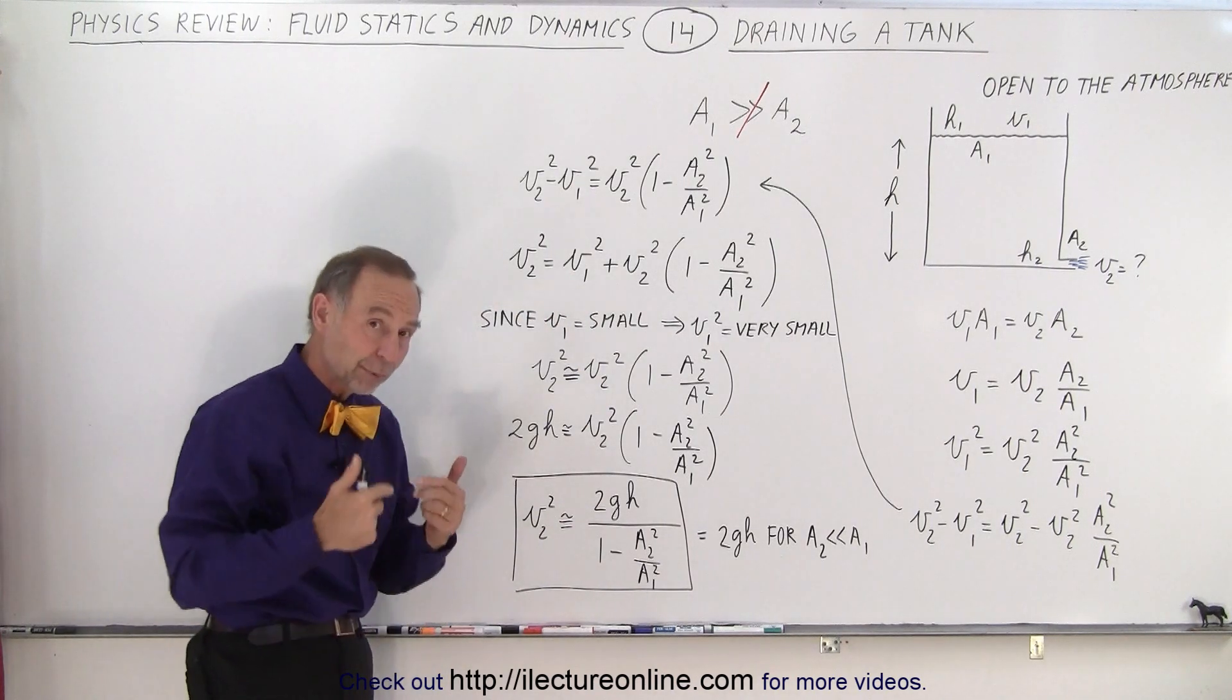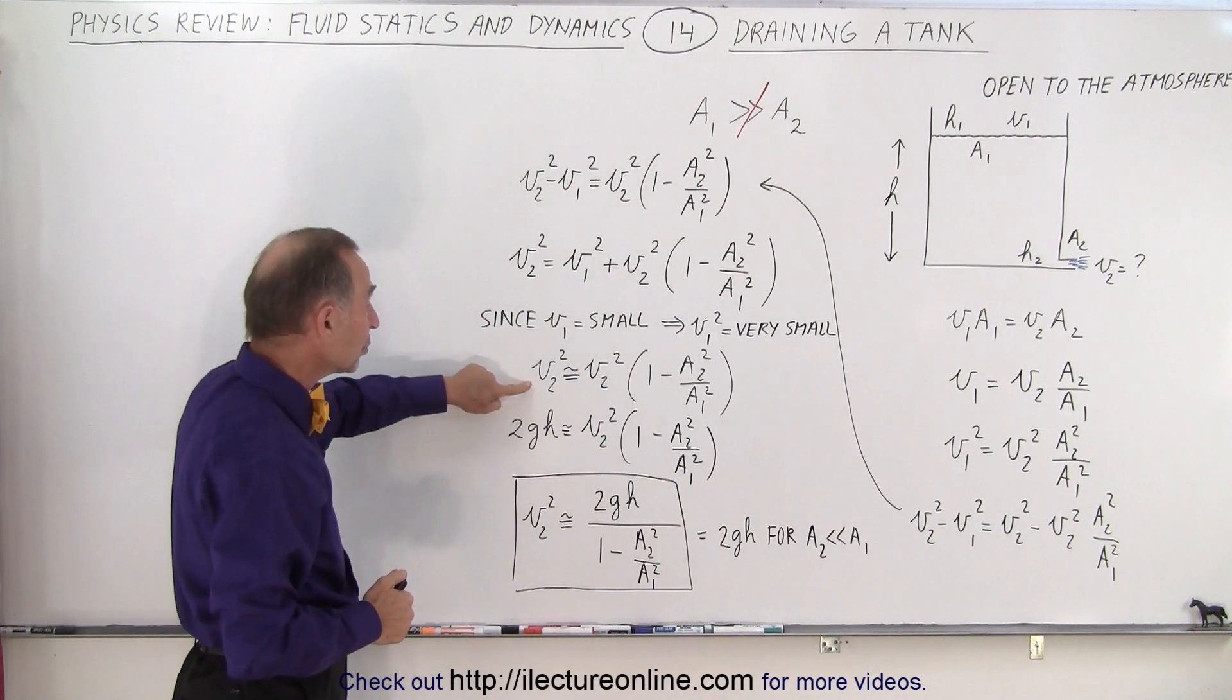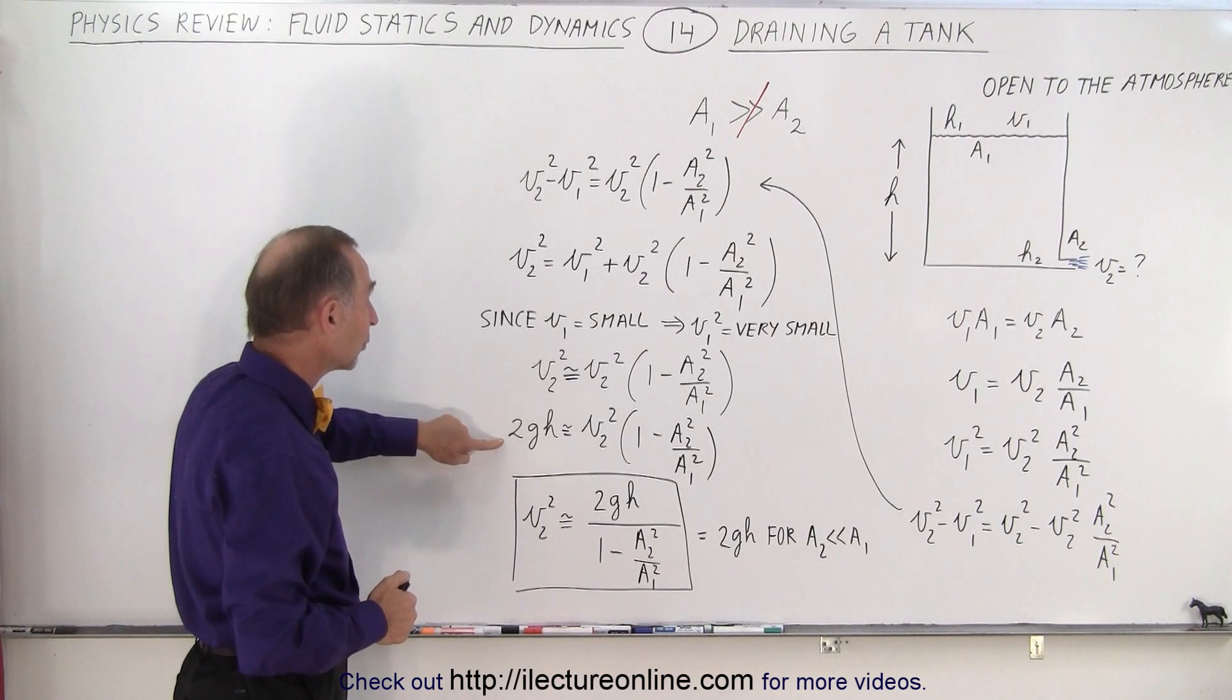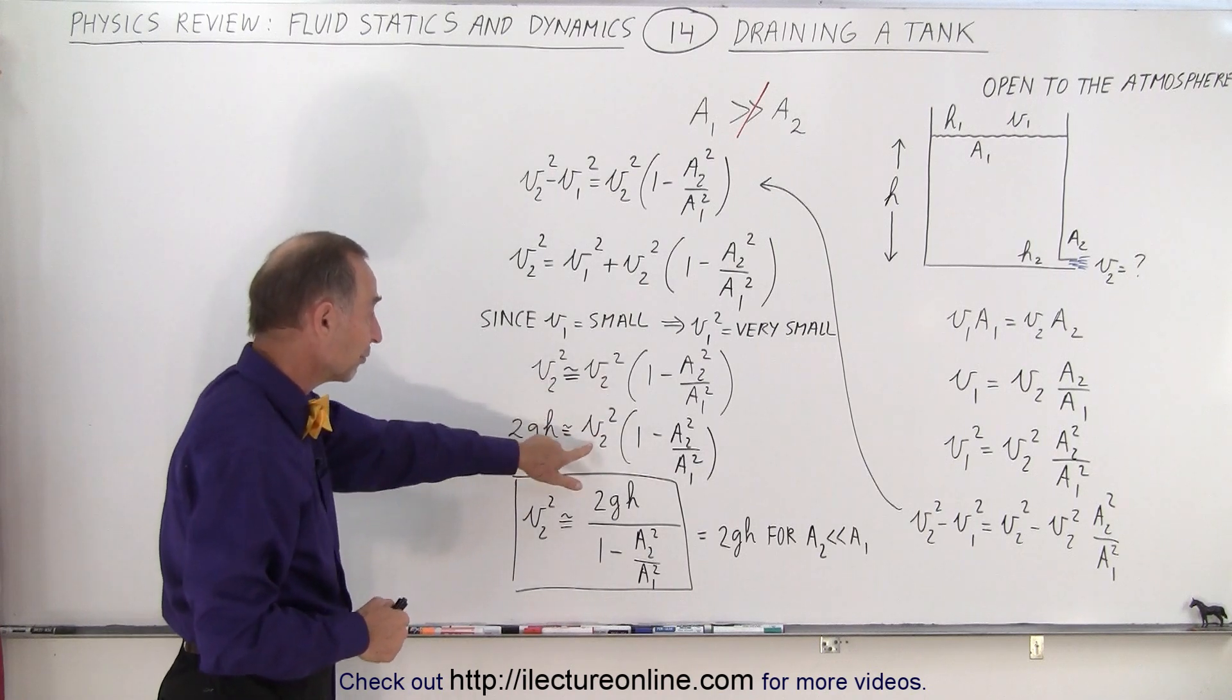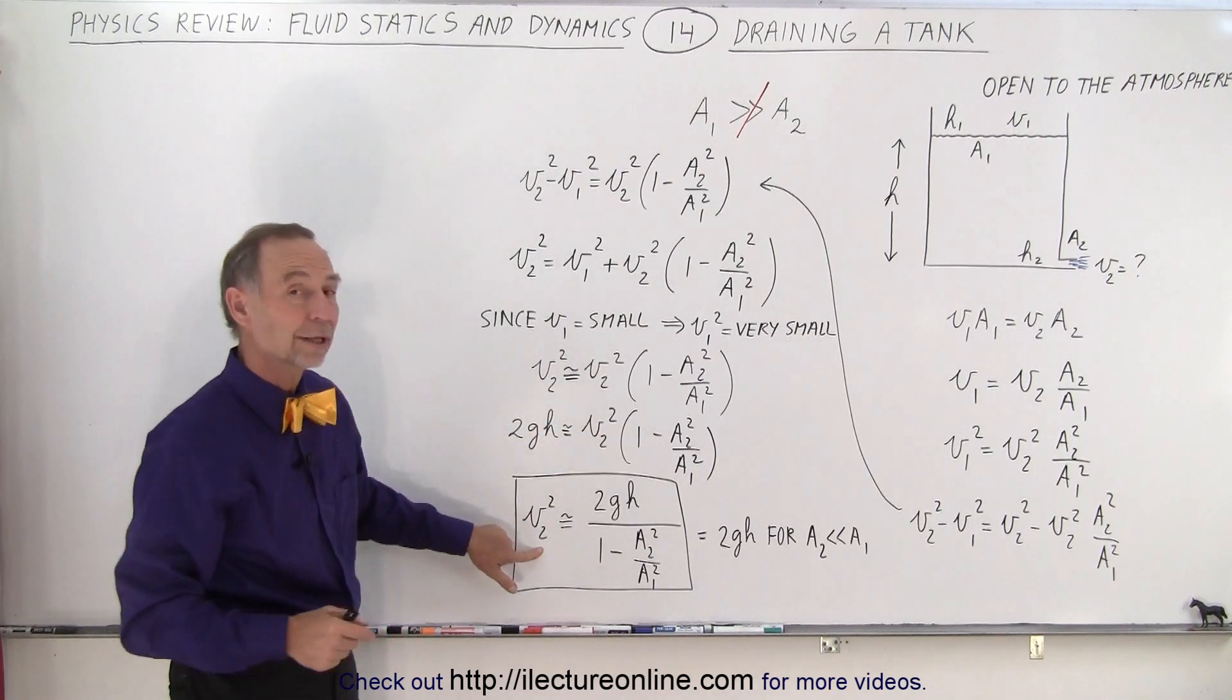Then we realize from the previous video that v2 is going to equal the square root of 2gh, so v2 squared is 2gh, and therefore when we solve this equation for v2 squared we end up with this right here.